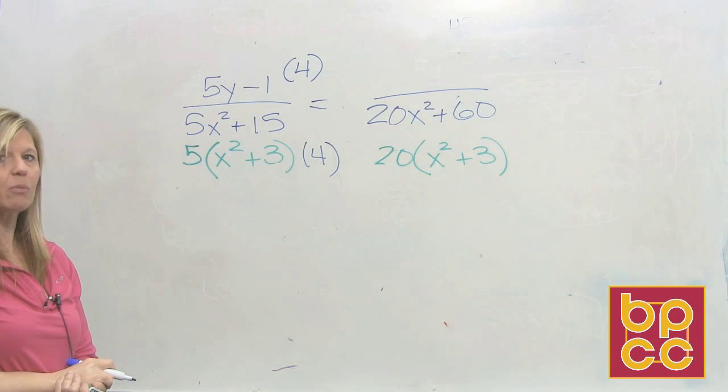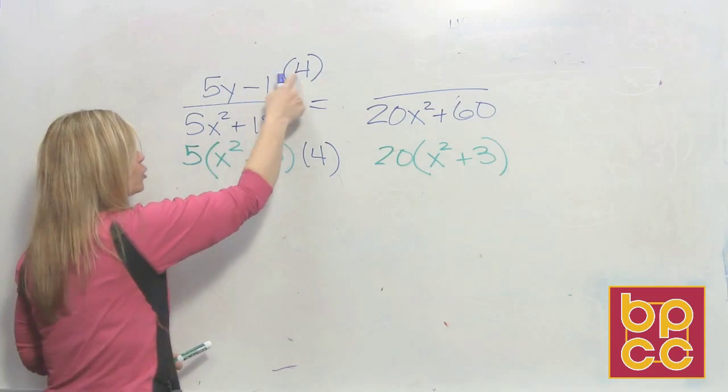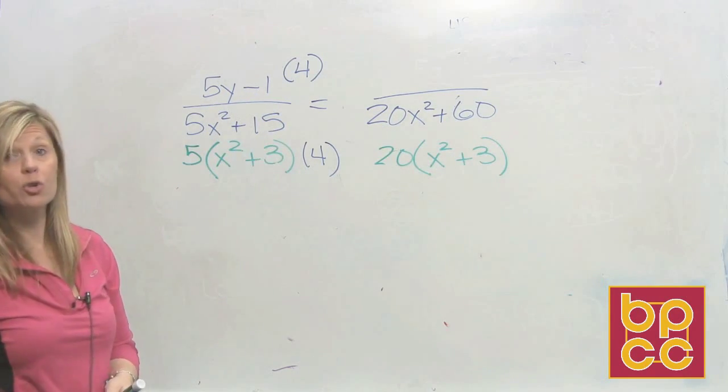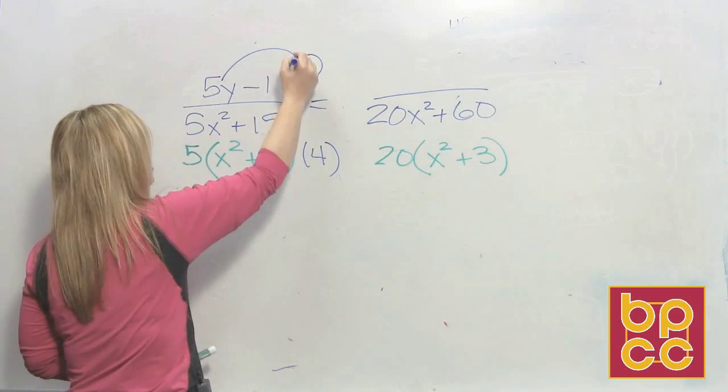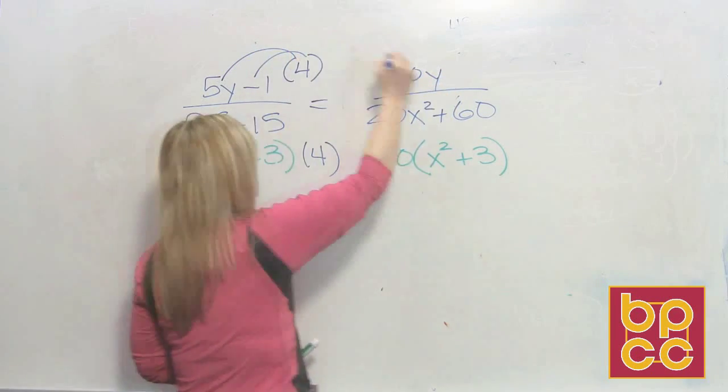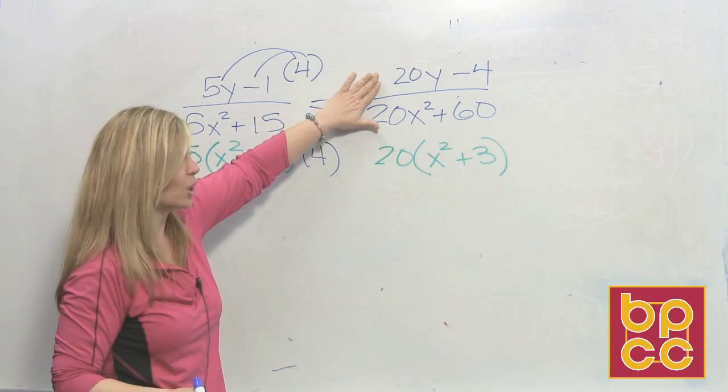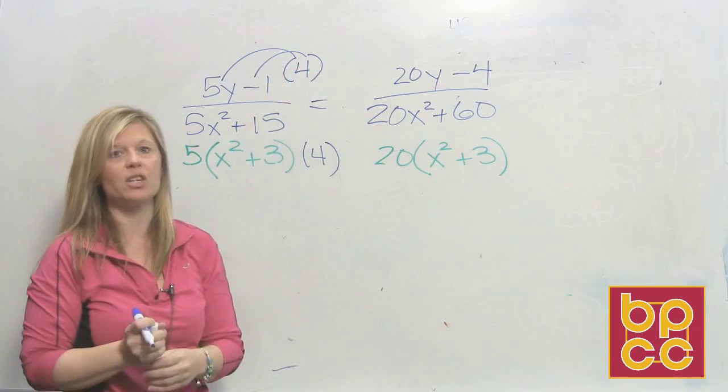Now here's where we use everything we've learned in chapter twelve. How do you multiply a binomial to a monomial? You do the distributive property. Five y times four is twenty y. Negative one times four is negative four. And now you've made a fraction that looks different but is equivalent to this one.